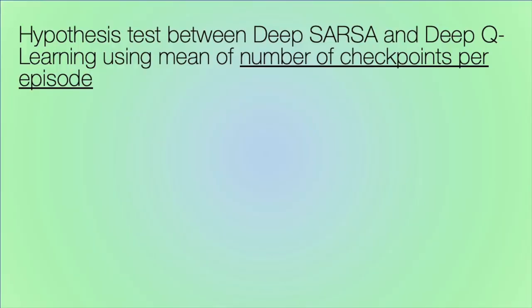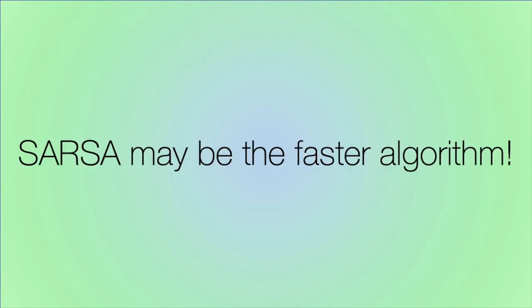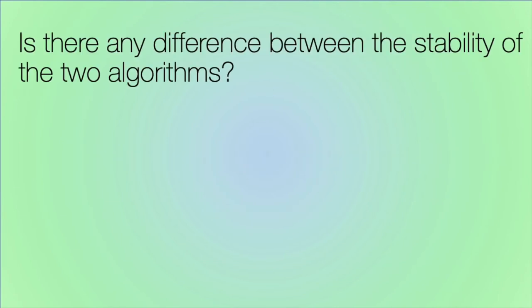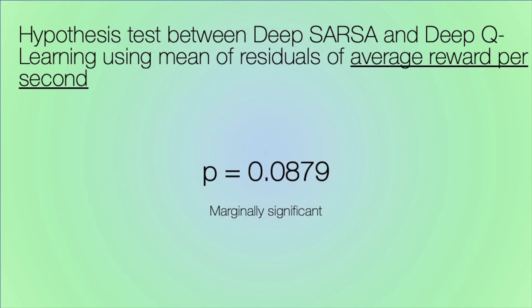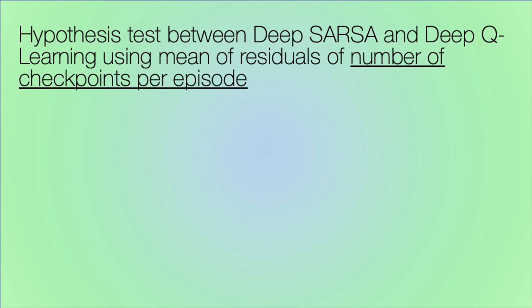We also ran a hypothesis test to compare the checkpoints data, finding a p-value of 0.042, which is also significant. In this case, we again observe that it is more likely that Sarsa is the faster algorithm. To compare the stability of the two algorithms, we obtain the residuals of a least squares fit on the data and conduct a hypothesis test on the residuals. The p-value for the residuals of the average reward per second data is 0.0879, meaning the difference is only marginally significant. The p-value for the residuals of the checkpoint data is 0.2421, which means that the difference in stability is not significant.